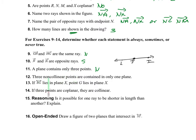Three non-collinear points are contained in one plane. In this case, it's always. One of the postulates states that through any three non-collinear points, there is exactly one plane.